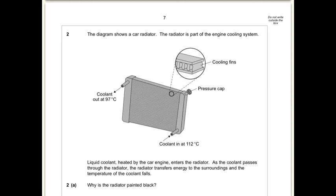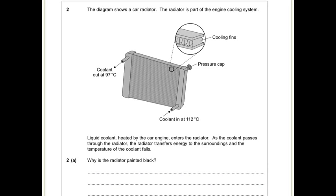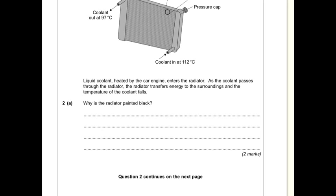Question 2, the diagram shows a car radiator. The radiator is powered by the engine cooling system. Liquid coolant heated by the car engine enters the radiator. As it passes through the radiator, the radiator transfers energy to the surroundings and the temperature of the coolant falls. Why is it painted black? Well, remember the colour of something has no effect on convection or conduction, it's all to do with radiation, infrared radiation. And so the matte black is a good emitter of infrared radiation, and it's very important that you've got that. So it's a good emitter of infrared radiation.